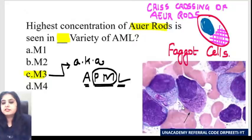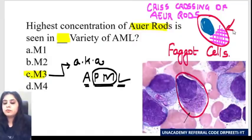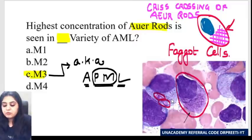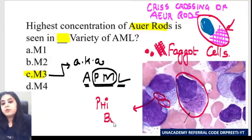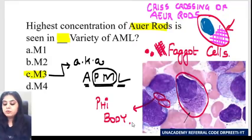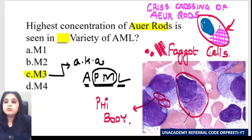Now look at this image: all the cells show criss-cross Auer rod formation. But in this cell, the same Auer rods have become a round body. What is the name of that body? The Auer rods, as long as they were in the shape of a rod, you called them Auer rods and the cell a faggot cell. When they become a round body, it is known as a phi body. So if the granules make a rod, call it an Auer rod; if they make a body, call it a phi body. The leukemia is AML M3.